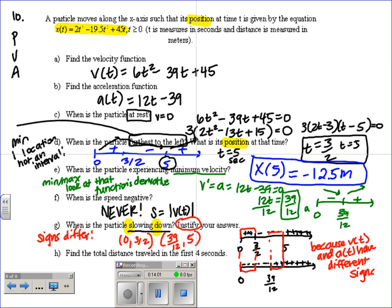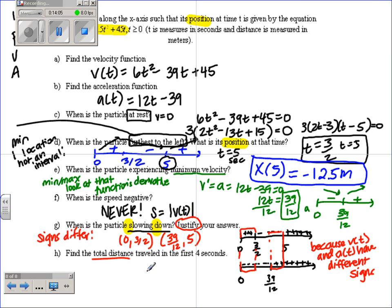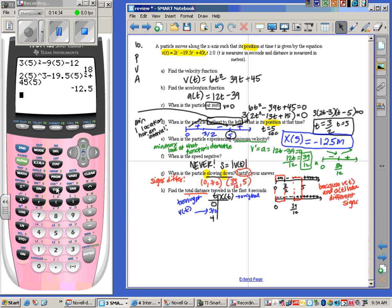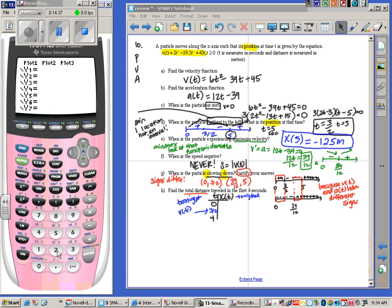So that would be from 0 to 3 halves, and from 39 twelfths to 5. The reason, if I justify, all you have to say is because velocity and acceleration have different signs. So that's all. Find the total distance. Okay, total distance, first 4 seconds. Well, on a number line, number line is given by position. So you're going to take the time values. The start time would be 0, the end time would be 4. And then you also need to figure out where does velocity equal 0. Those are your turning points. Now, in this case, velocity equals 0 at 3 halves and 5. But we only care about 3 halves because it's in between 0 and 4. You're putting this into original equation.